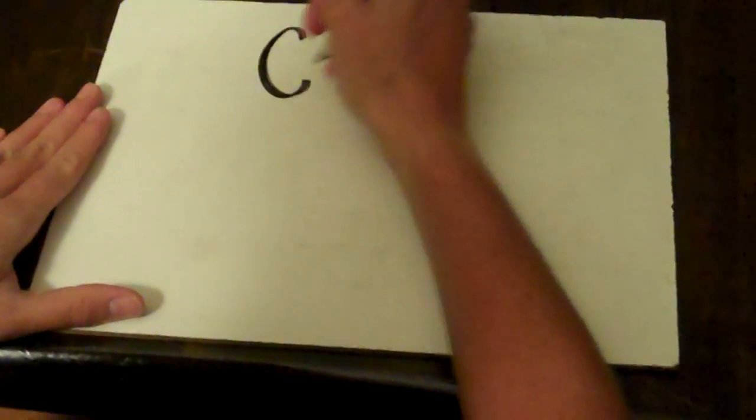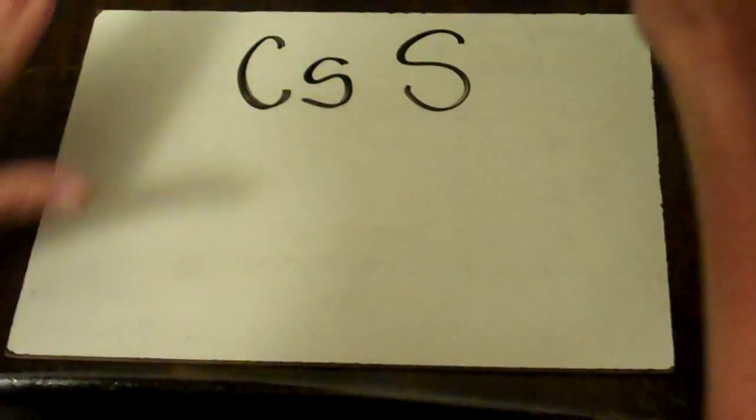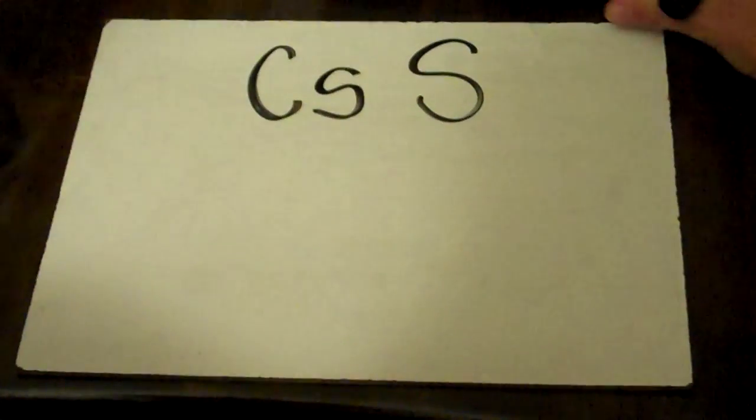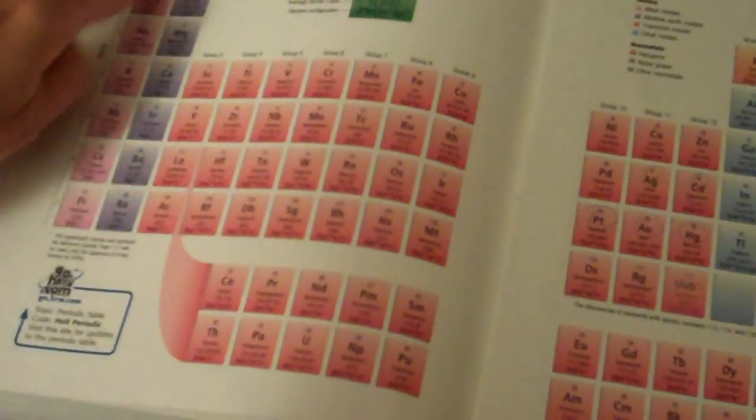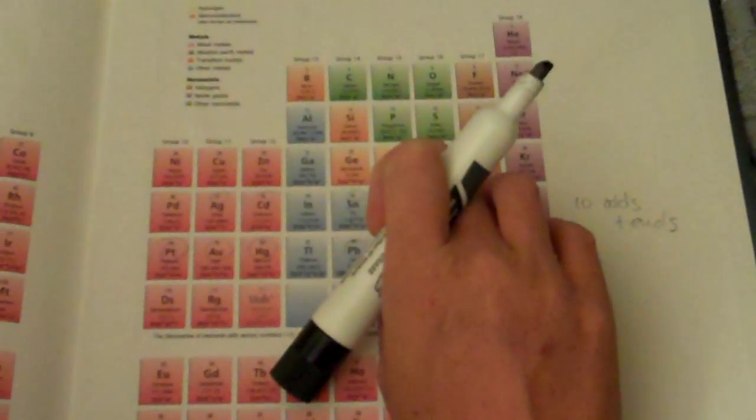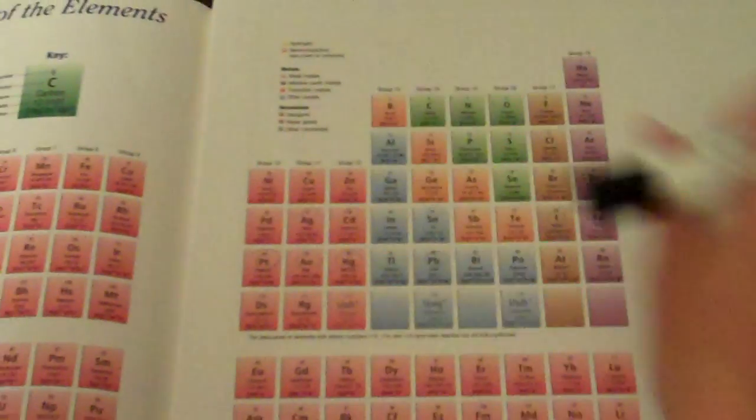How about cesium and sulfur? Cesium and sulfur. Cesium is going to be over here in the plus 1 column. And then sulfur is going to be over here in the minus 2 column. And you can label your periodic table like this.